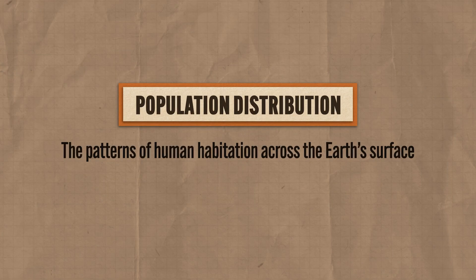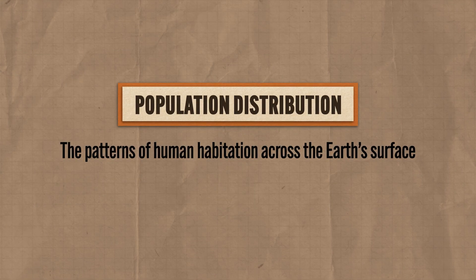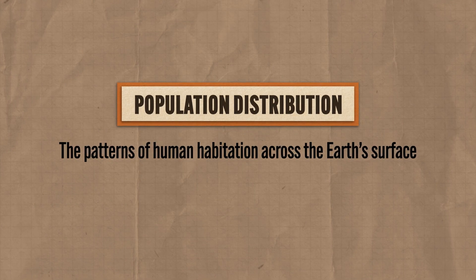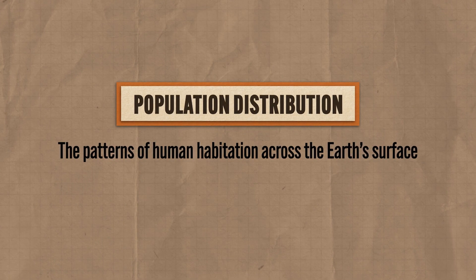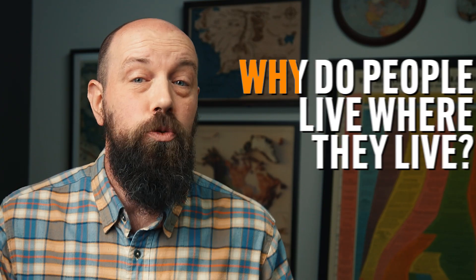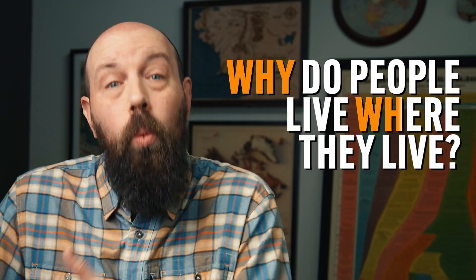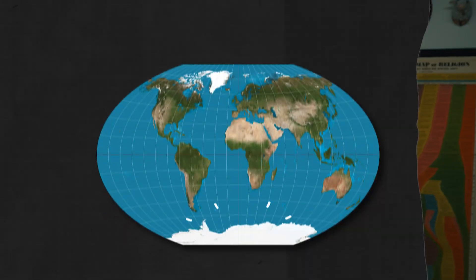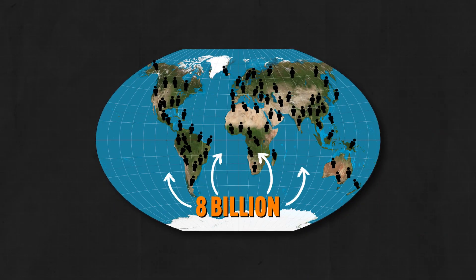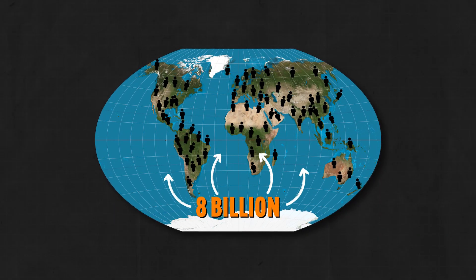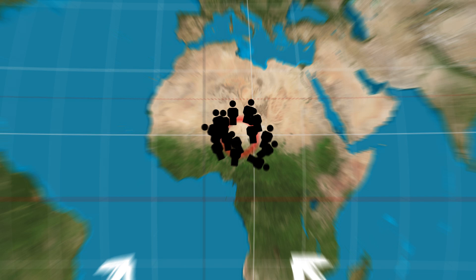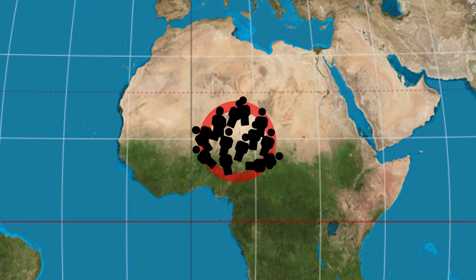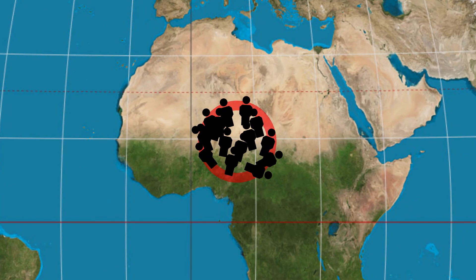Population distribution refers to the patterns of human habitation across the Earth's surface. In other words, why do people live where they live? And that might not sound like an interesting question until you realize that all 8 billion humans on this planet live on only 5% of the Earth's surface.